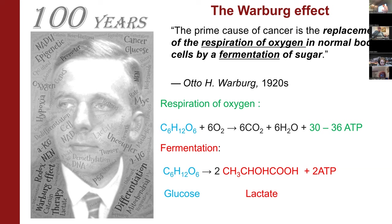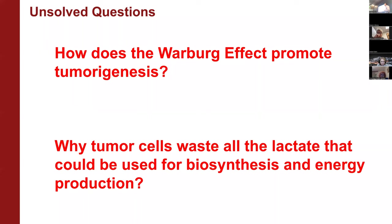It's very easy to describe the Warburg Effect. Normal cells convert glucose in the presence of oxygen into CO2 and water, generating a lot of ATP. But tumor cells convert the majority of glucose into lactate, generating much less ATP. This seems like a big waste. So there are many unsolved questions about the Warburg Effect. The most important question is: how does the Warburg Effect promote tumorigenesis? Why would tumor cells waste all that carbon and energy as lactate instead of using them for biosynthesis and energy production?